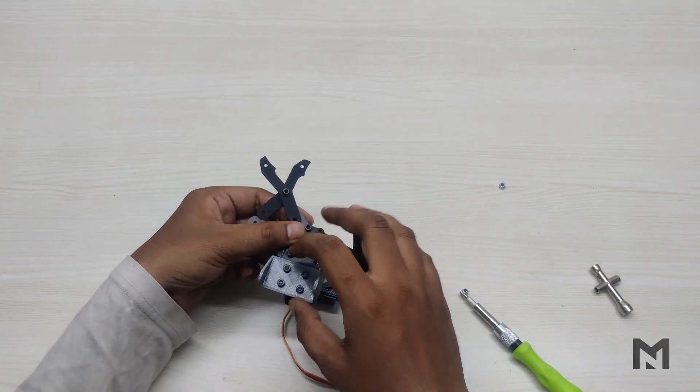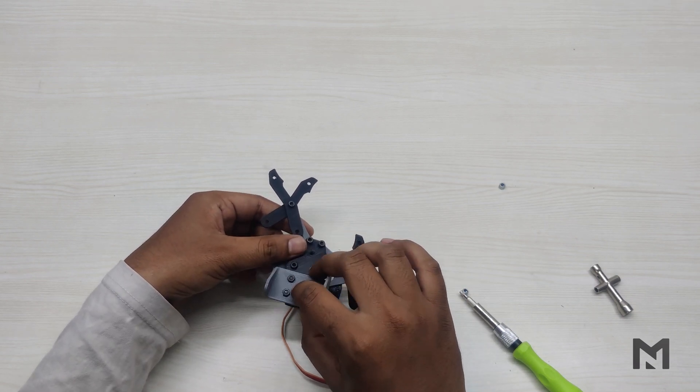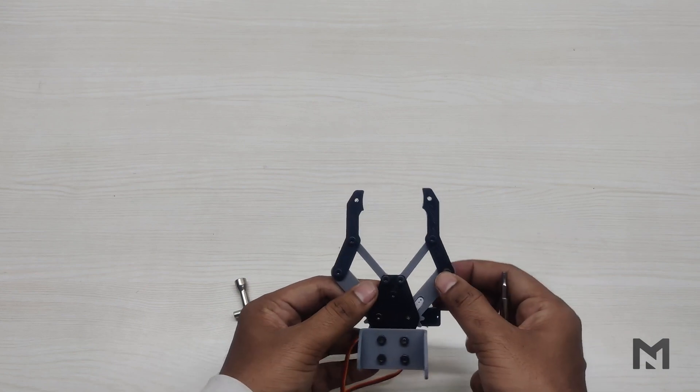Though it's a tricky process, but once the bolts are aligned with the holes, then it's easily assembled. Then fix the remaining parts and the claw is ready to work.